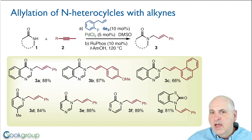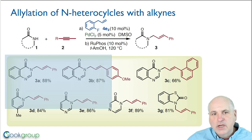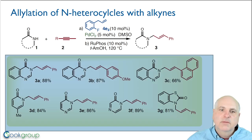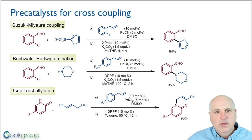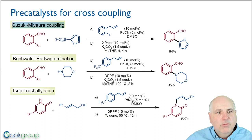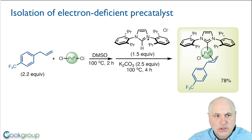This ability to quickly screen the allyl moiety of these palladium(II) precatalysts allowed us to generate a general reaction that worked for a variety of different substrates. These electron-deficient palladium(II) precatalysts were also very efficient for some difficult palladium(0)-catalyzed reactions, such as difficult Suzuki-Miyaura couplings, Buchwald-Hartwig aminations, and some Tsuji-Trost allylations.